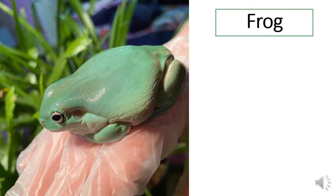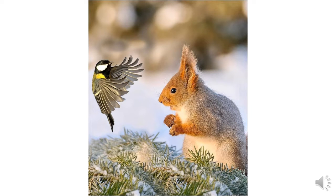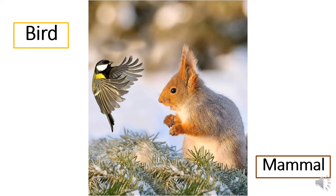Now, did you see that funny video? What is this animal? What do we call it? Of course it's a frog. How did you know? Does it have scales? No. What does the frog have? It has smooth, moist skin. Now look at this picture — we have two animals. One of them is a bird and the other is a mammal. How did you know? One has feathers, a beak, and wings, and the other has hair — or we can also call it fur.